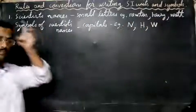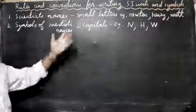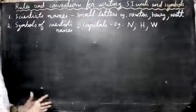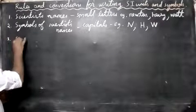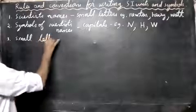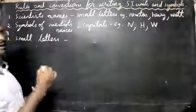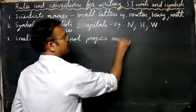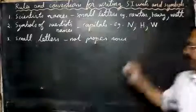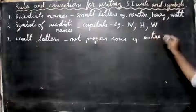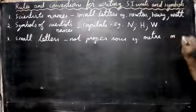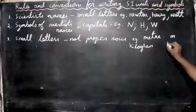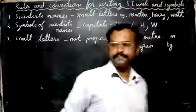The third rule: units like meter and kilogram are not named after scientists, so they are written in small letters. For example, the symbol for meter is a small 'm', and the symbol for kilogram is a small 'g' (kg).